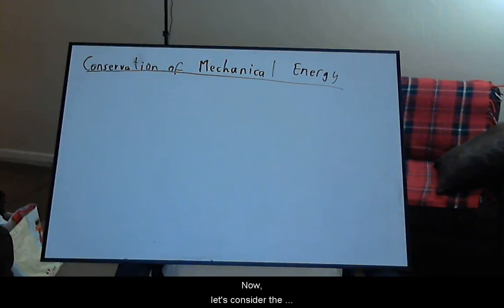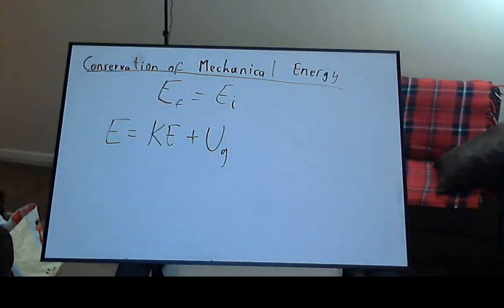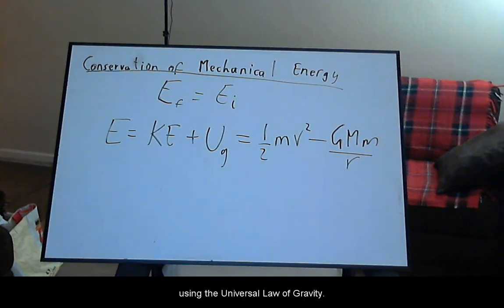Now let's consider the conservation of mechanical energy. The conservation of mechanical energy states that in the absence of any outside force other than gravity, the total mechanical energy of the system remains the same. Mechanical energy is the sum of kinetic energy and gravitational potential energy. This is the form using the universal law of gravity.